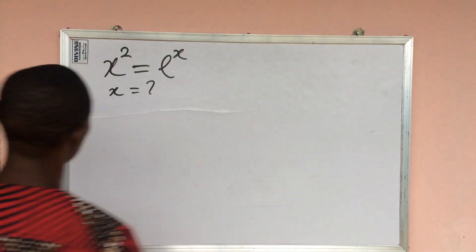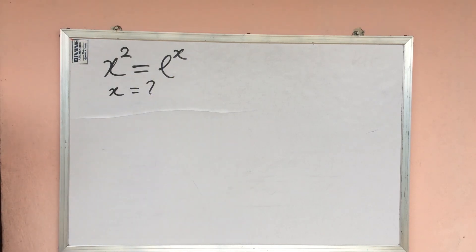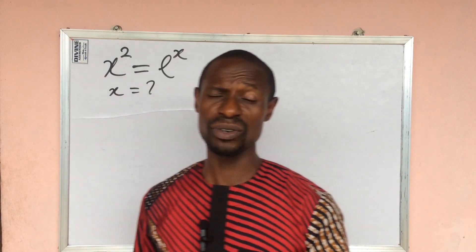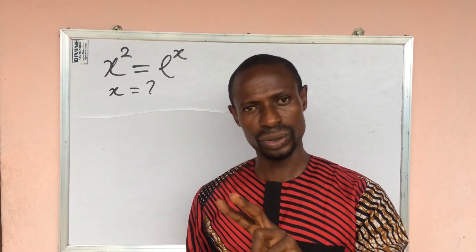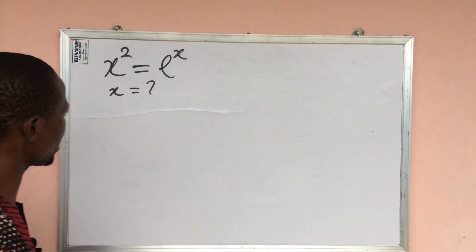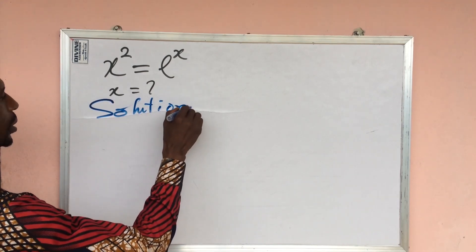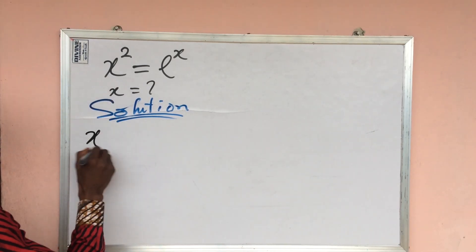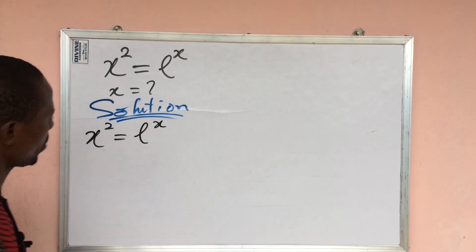The question reads: x squared equals e to the power of x. What will be the possible values of x? From this exponential equation it is obvious that we have to solve for two roots that will satisfy this equation. Let's take our solution from here — we put down our question: x squared equals e to the power of x.